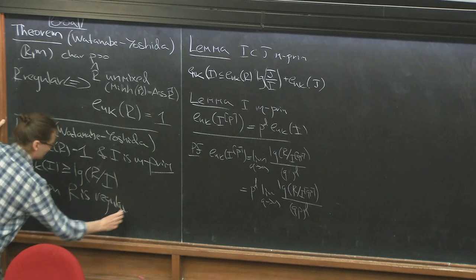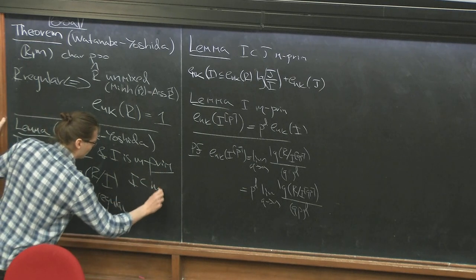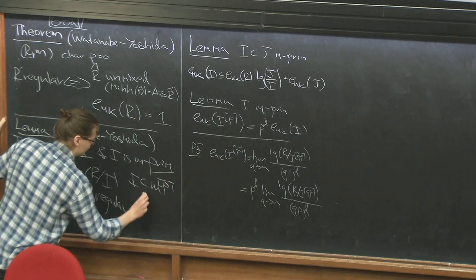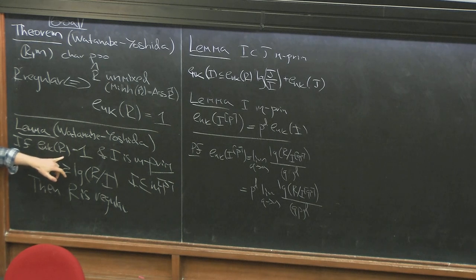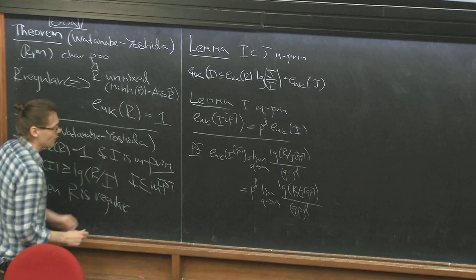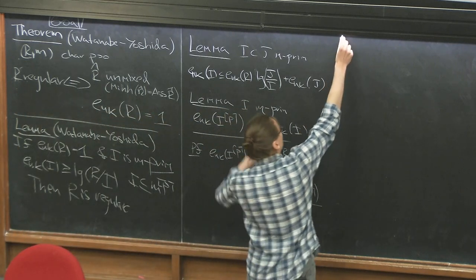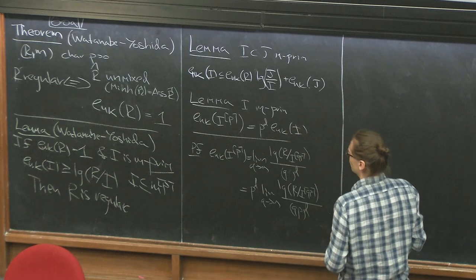We also need i to lie inside m bracket p. If we know that Hilbert-Kunz multiplicity is 1 and we can find such a special m-primary ideal, then that is enough to deduce that r is regular. Let me prove this lemma.